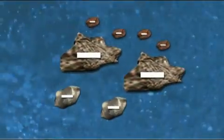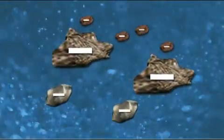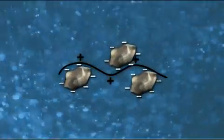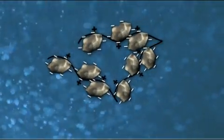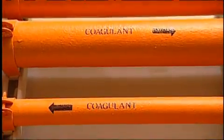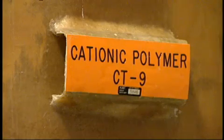Natural particles in water have negative charges that repel other material and thereby keep it in suspension. In coagulation, positively charged chemicals are added to neutralize or destabilize these charges and allow the particles to accumulate and be removed by physical processes such as sedimentation or filtration. Commonly used coagulants include aluminum and iron salts and cationic polymers.